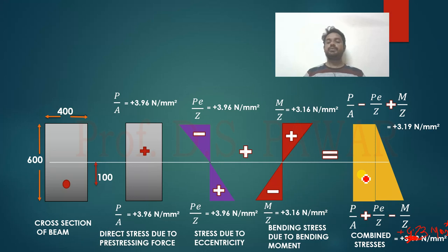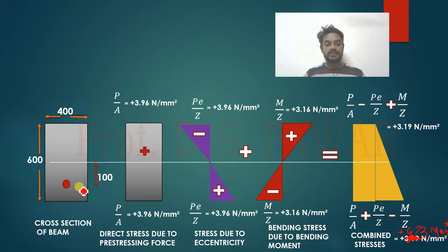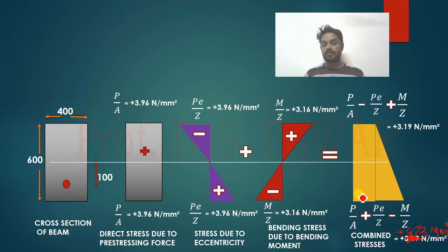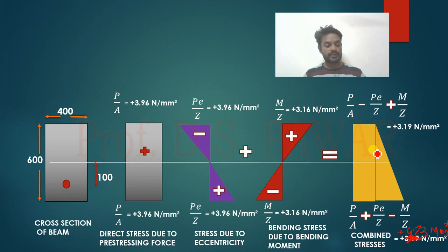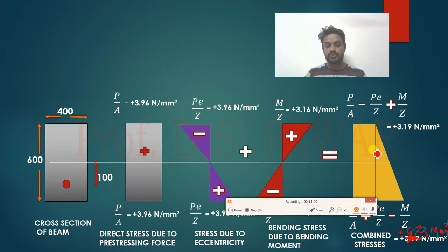This is how we calculate the stresses by providing the tendon with eccentricity — determining the top fiber and bottom fiber stresses of the beam. We will stop here and in the next lecture we will see another different problem and continue. Thank you very much for joining.